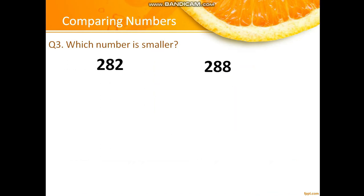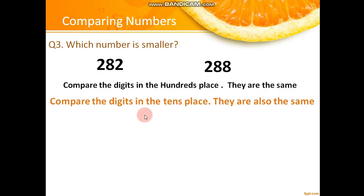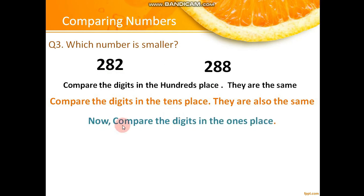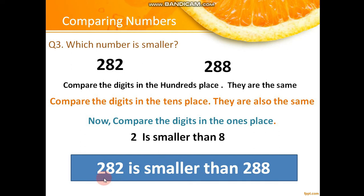Let's revise the concept once again with 282 and 288. First, we compared the digits in the hundreds place — both were 2, the same. Then we compared the digits in the tens place — both were 8, also the same. Finally, we compared the digits in the ones place and found that 2 is smaller than 8. That's how we find that 282 is smaller than 288.